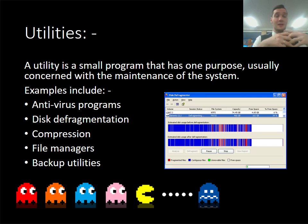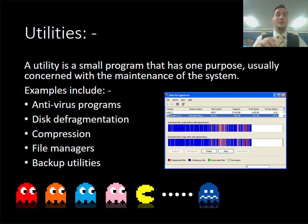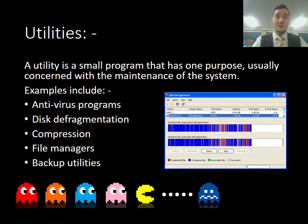Examples of utilities include antivirus programs such as Norton's, disk defragmentation, compression, file managers, and backup utilities. One exam question asked: why would you not use disk defragmentation on a solid state drive? Solid state drives have a limited number of times we can write onto them. Disk defrag moves files closer together, rewriting them, which reduces the number of write operations remaining. File managers help organise files in folders. Compression tools include 7-Zip, WinZip, or WinRAR. These are all utilities you need to be able to explain.